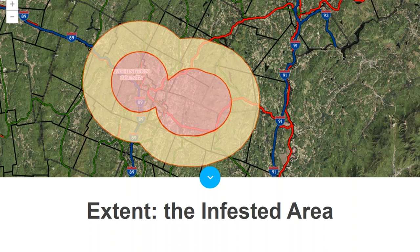The EAB infested area layer is under the Forest Parks and Recreation tab in the ANR Atlas, which allows you to overlay the infested area over other layers like parcels or roads.